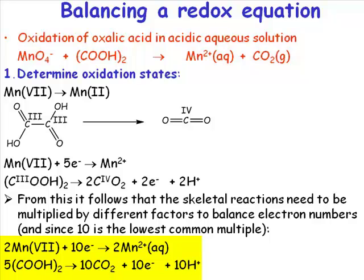This gives us the following two equations: 2 manganese 5 plus 10 electrons going to 2 manganese 2, and we have 5 oxalic acids going to 10 carbon dioxide molecules, 10 electrons, and 10 protons. What's the next step?